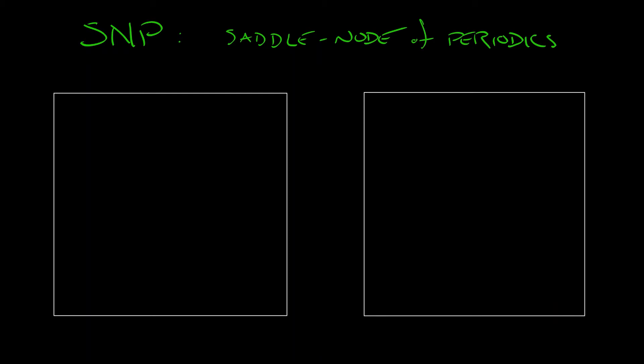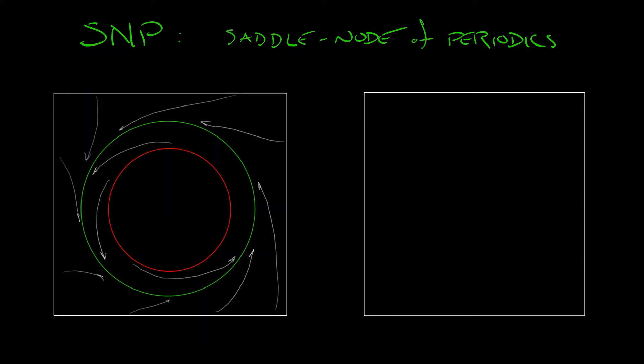But let's start with the saddle node of periodics. This one is relatively simple. Let's say that you're in the plane, continuous or discrete time, and you have a pair of limit cycles. One stable, one unstable, and they are nested. One is within the disk bound by the other. And they're going along just doing their thing.